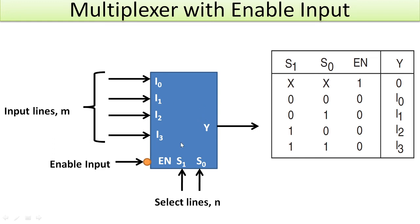Now when this particular enable input is connected to low, this multiplexer starts functioning as per the signal provided at S1 and S0. When we provide 00 at S1 and S0, the I0 input gets selected at the output, and so on.